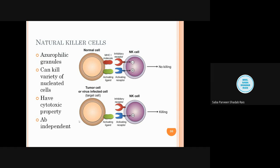Natural killer cells do not have T cell receptors or any immunoglobulin incorporated in the plasma membrane. They recognize potential target cells differently, employing natural killer cell receptors. They can express CD16, a membrane-bound receptor for the carboxyl terminus Fc region. With their cytotoxic property, they can kill a variety of infected cells.